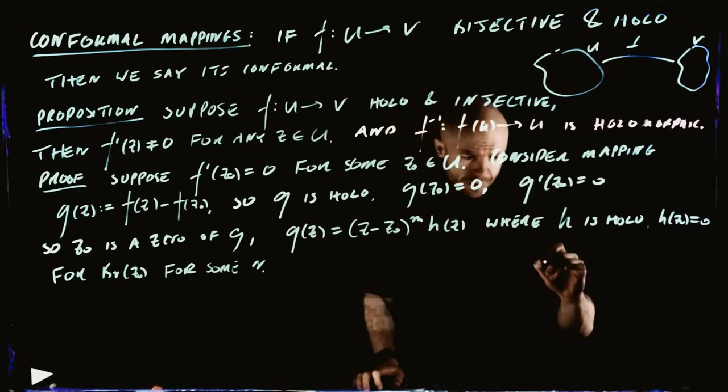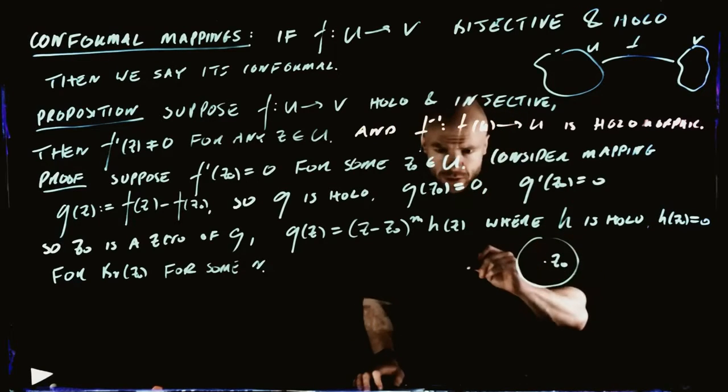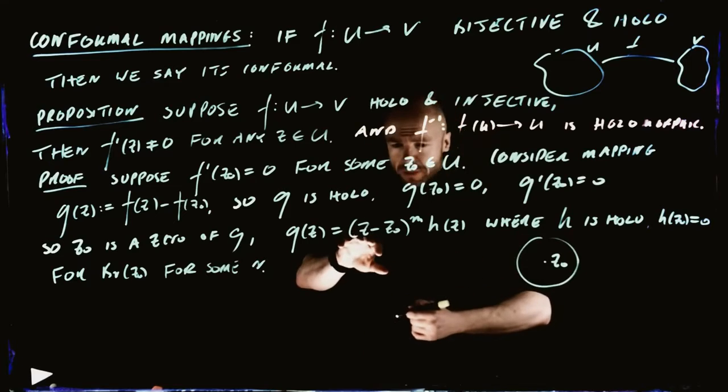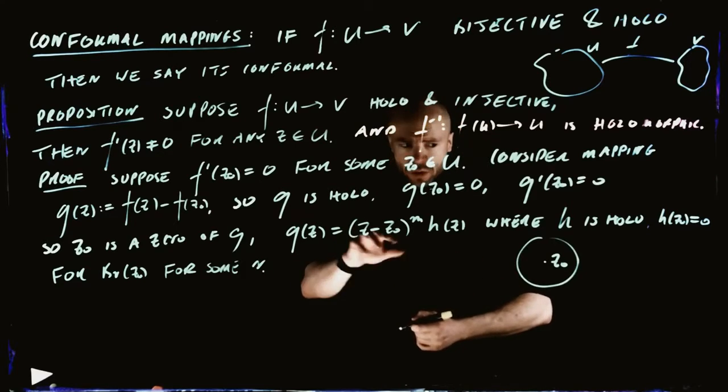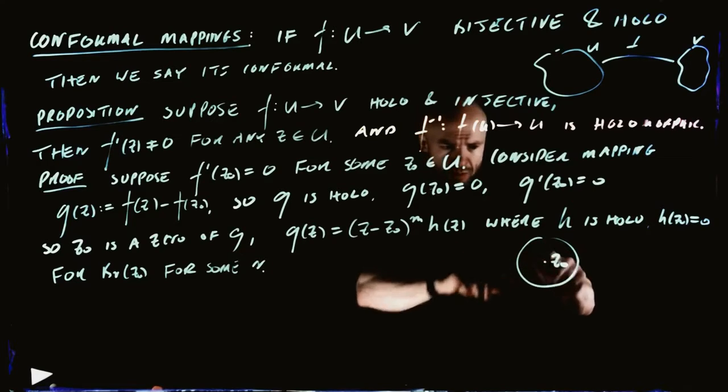This is our point Z0. We have some little ball around it. What is this mapping doing to it? What is the action here? What is happening to a small ball like this?